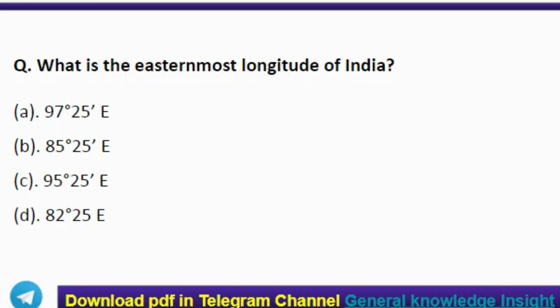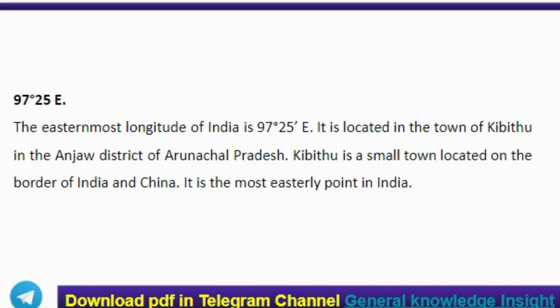Next question: what is the easternmost longitude of India? The correct answer is option A, 97 degrees 25 minutes East. The easternmost longitude of India is 97°25'E, located in the town of Kibithu in the Anjaw district of Arunachal Pradesh. Kibithu is a small town on the border of India and China and is the most easterly point in India.